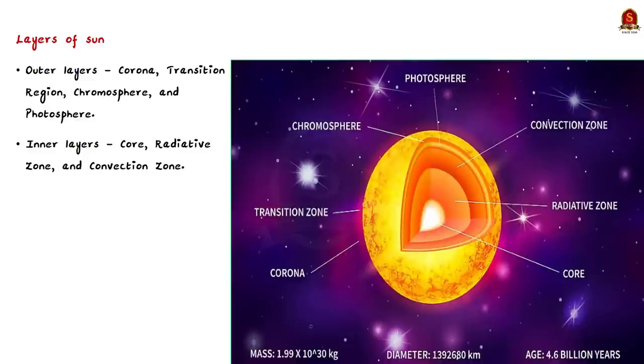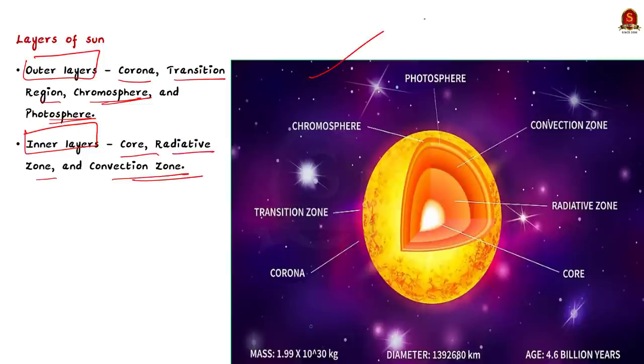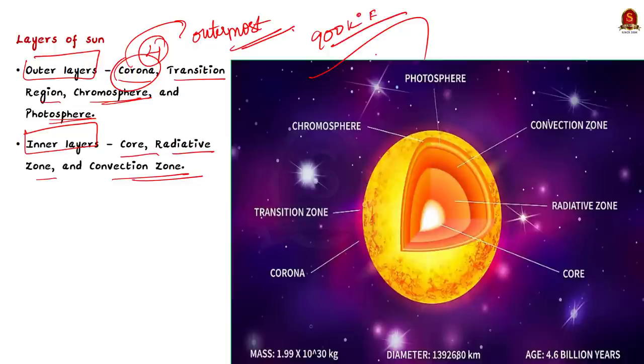Now, let us see some basic about the layers of the sun. The layers of the sun are divided into two large groups, the outer and the inner layers. The outer layer are corona, the transition region, the chromosphere and the photosphere, while the inner layers are the core, the radiative zone and the convection zone. You can see this in the image here. Of the four outer layers of the sun, the corona is the outermost one. It starts at about 1300 miles above the photosphere and its temperature is measured to be around 900,000 degree Fahrenheit. Of the three inner layers of the sun, the convection zone is the outermost one. It completely surrounds the next layer, that is the radiative layer, after which we have the core, that is the innermost layer of the sun.